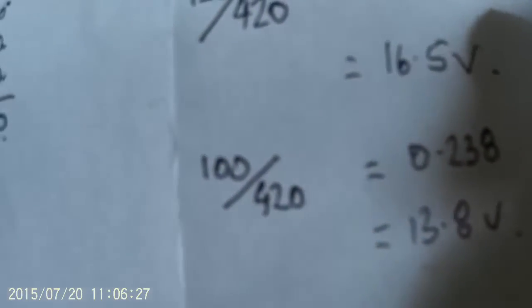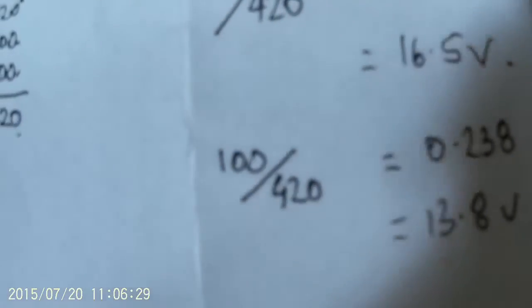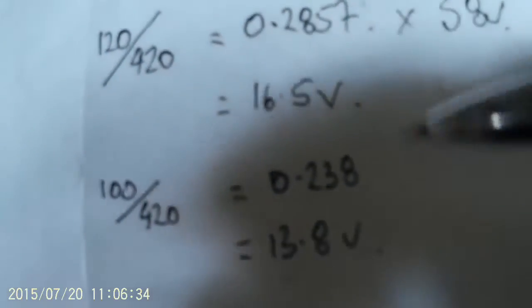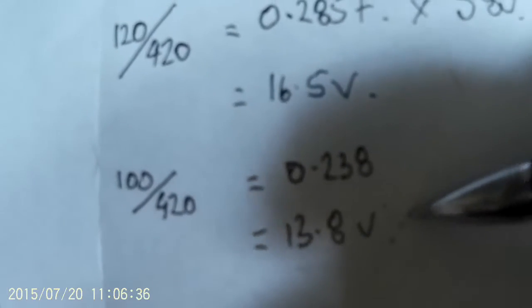And if you do the same for the others in the string, you end up with 13.5 volts. So basically that battery that's charged earlier than the rest of them ends up boiling, and the other batteries end up starved.